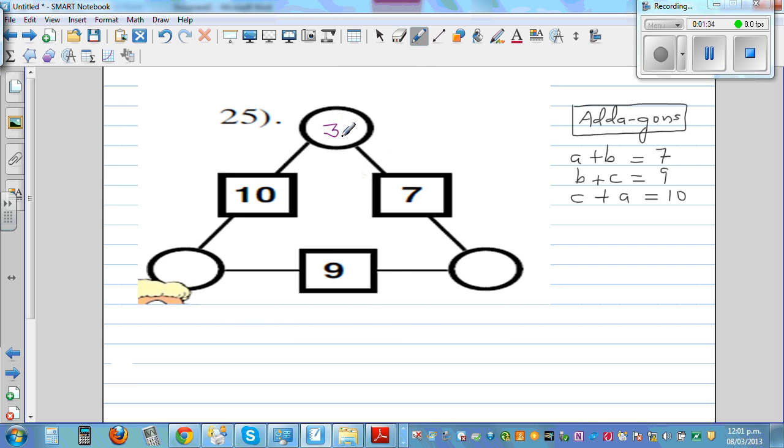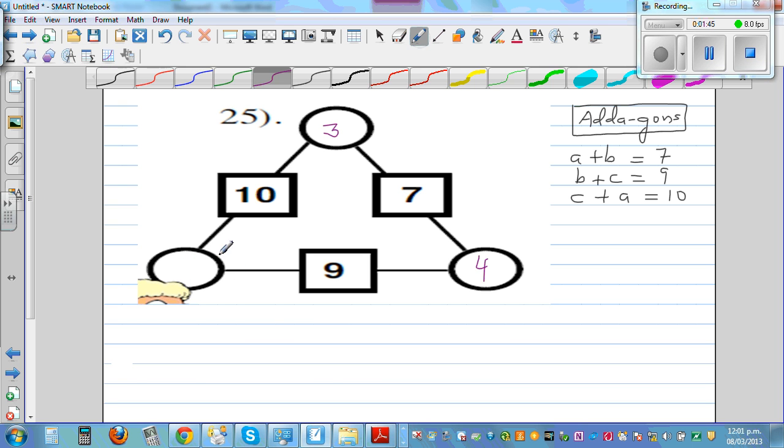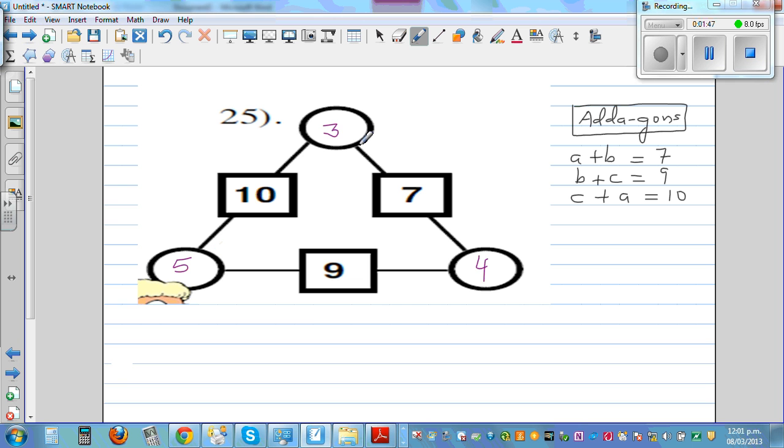So now let's take 3 and 4. 3 and 4. I could have done 1 and 6. So if I go 3 and 4, that's 7. So 4 plus 5 is 9. This is 5. But 5 plus 3 is not 10. So this is not right. So this is called trial and error method.